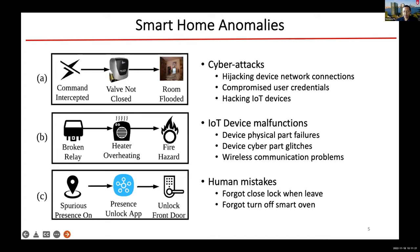That happens all the time. In our experiment, we found that some IoT devices are not that reliable — there are all kinds of problems. It could be the physical part failing; for example, a smart light bulb's metal part could break and it won't turn off. Or it could be the cyber part — hardware or software problems, or wireless communication problems. So IoT devices could have malfunctions.